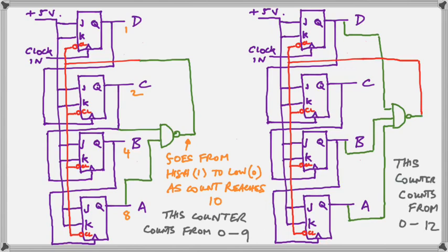So our counter is going to count from 0 to 12 and reset on 13. So that's all it is. Now you have the secret of the modulo N ripple counters and you can make them count to any number that you choose.